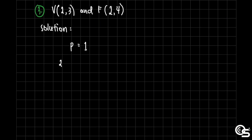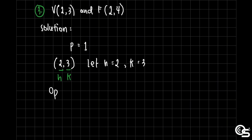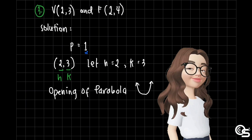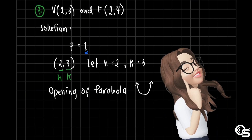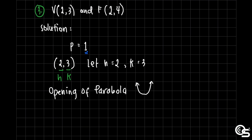From the given vertex at (2, 3), we let h equal 2 and k equal 3. Next, let us determine the opening of the parabola. Since the focal distance p equals 1, it is positive, so we are expecting a parabola that opens upward. We go to summary table number 3 to find the pattern for the directrix equation.